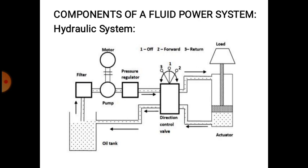The actuator may be of linear type — providing linear motion — or a rotary actuator. In one position of the valve the actuator extends, and in another position it retracts. After completing the work, the oil returns back to the reservoir. So the components are: filter, pump, reservoir, pressure relief valve, direction control valve, and actuator, which may be linear or rotary type.